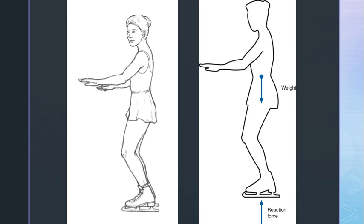Let's try our hand at free body diagrams. Take the example of a woman standing still on the ice — her mass is 50 kilograms. One force we know acts on her is the force of gravity (her weight), drawn as an arrow pointing downward through her center of gravity. If weight were the only force, she would be accelerating downward at 9.81 m/s². But because she's standing still, we know there is another force working to cancel out the effects of gravity.